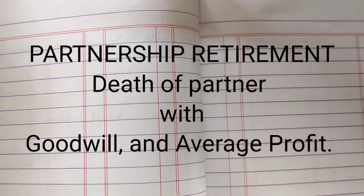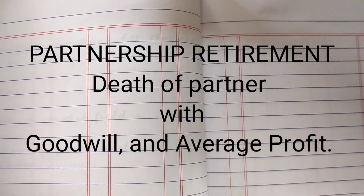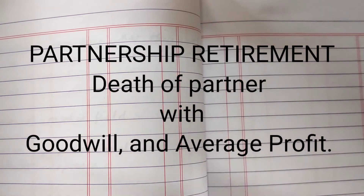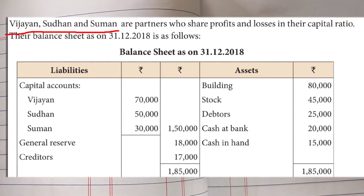In this video we are going to look at a retirement sum — a five mark sum which deals with share of profit and goodwill adjustment. The sum goes as: Vijayan, Sudhan and Suman are partners who share profits and losses equally in the capital ratio.